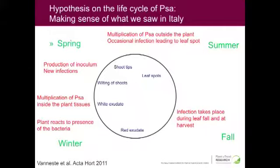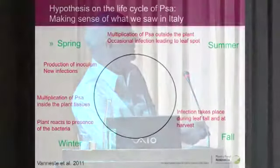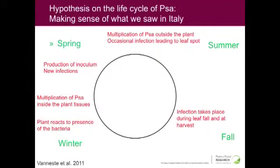However, we know that in spring we have white exudate, which is inoculum. That white exudate leads to further infection, and throughout the spring and early summer period you can have a number of infections, which always lead to more inoculum and more infection. The leaf spots describe a phase of the disease where the pathogen survives epiphytically on the leaf and occasionally infects the plant.